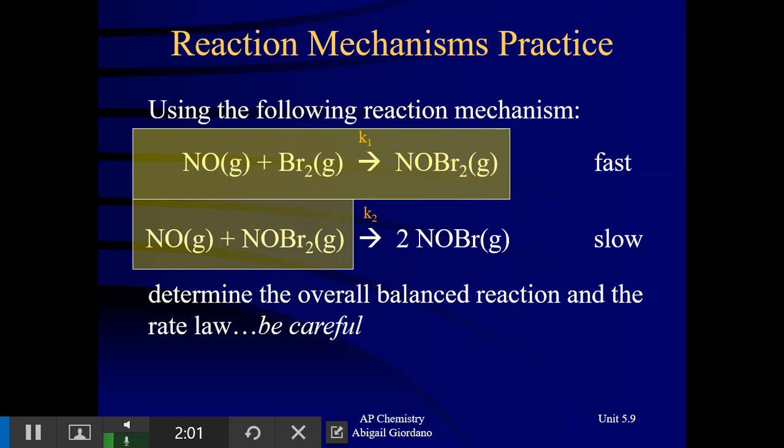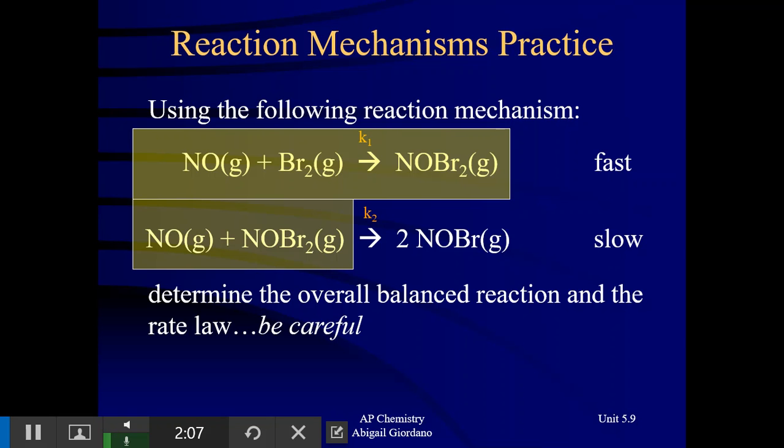Now, if I look at what's in this box that I have shaded here, and I think just about what's in that shaded region, and I say, what can I cancel out just in that shaded region? I see an intermediate that I can get rid of, NOBR2. I can cancel that out.